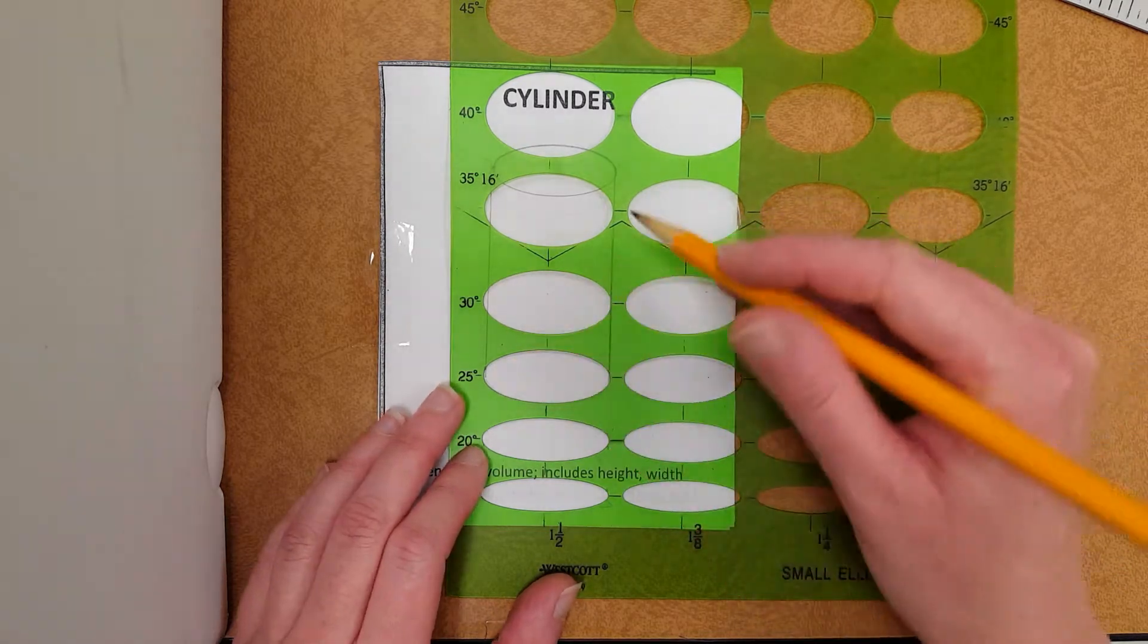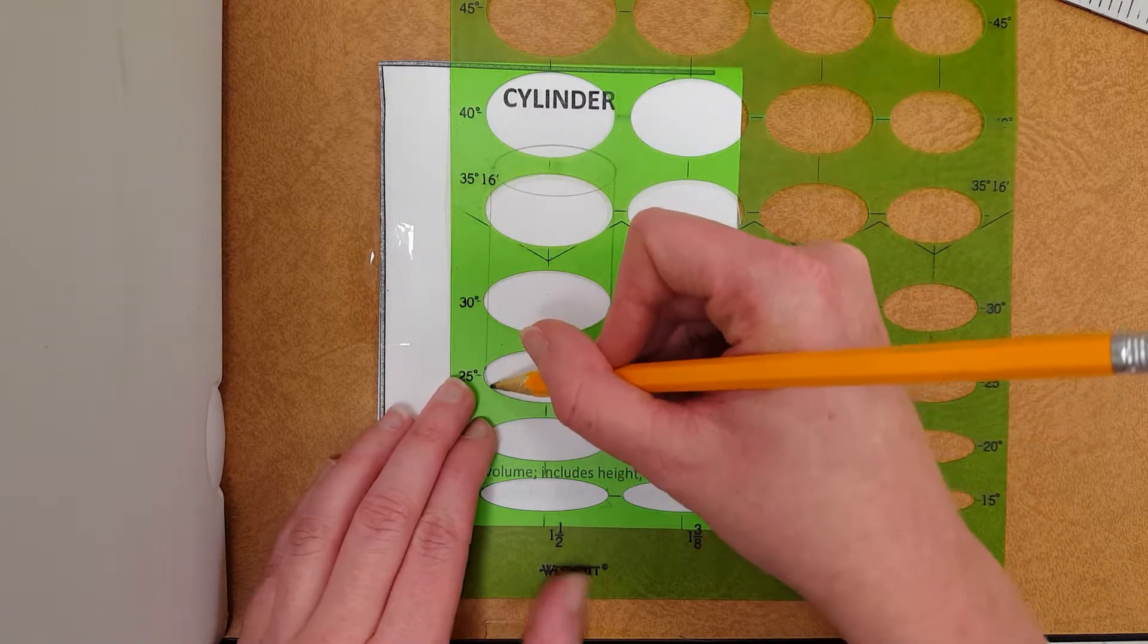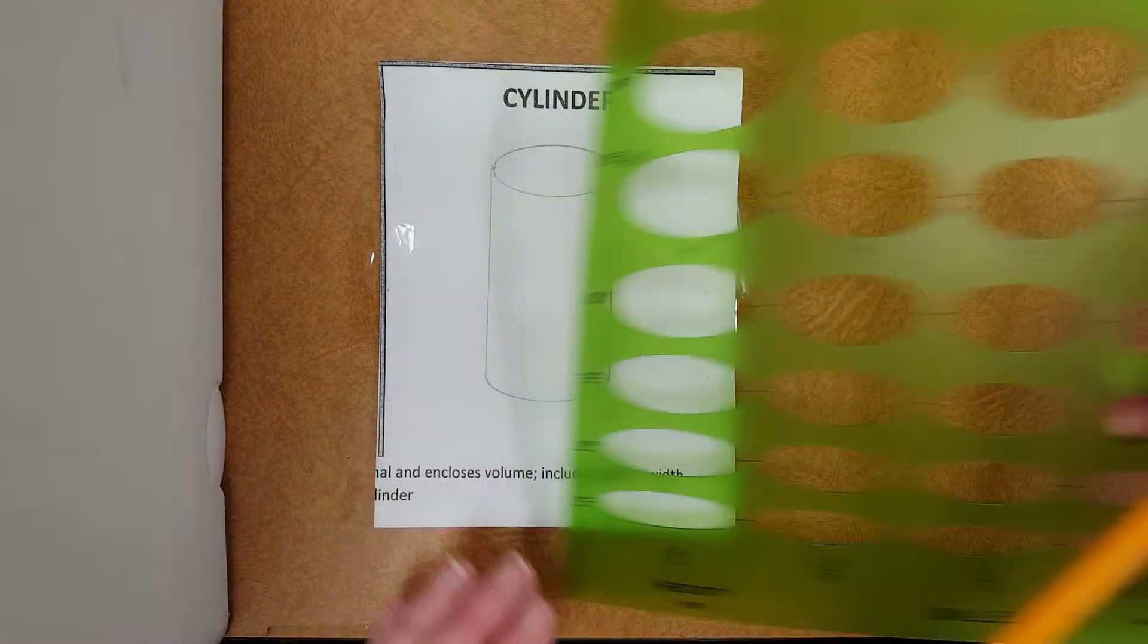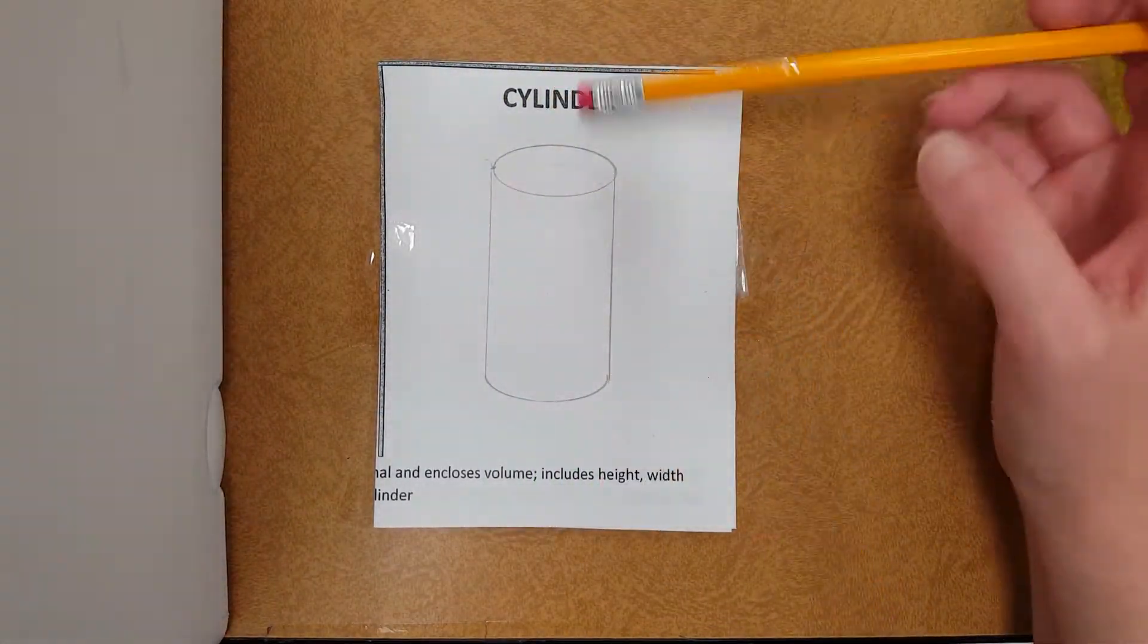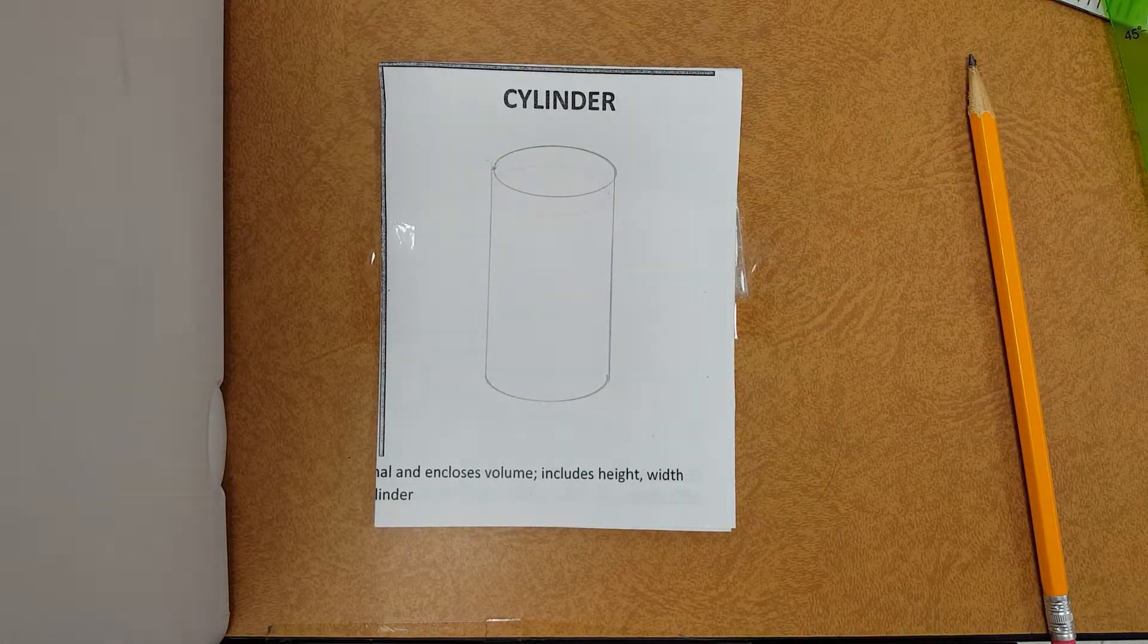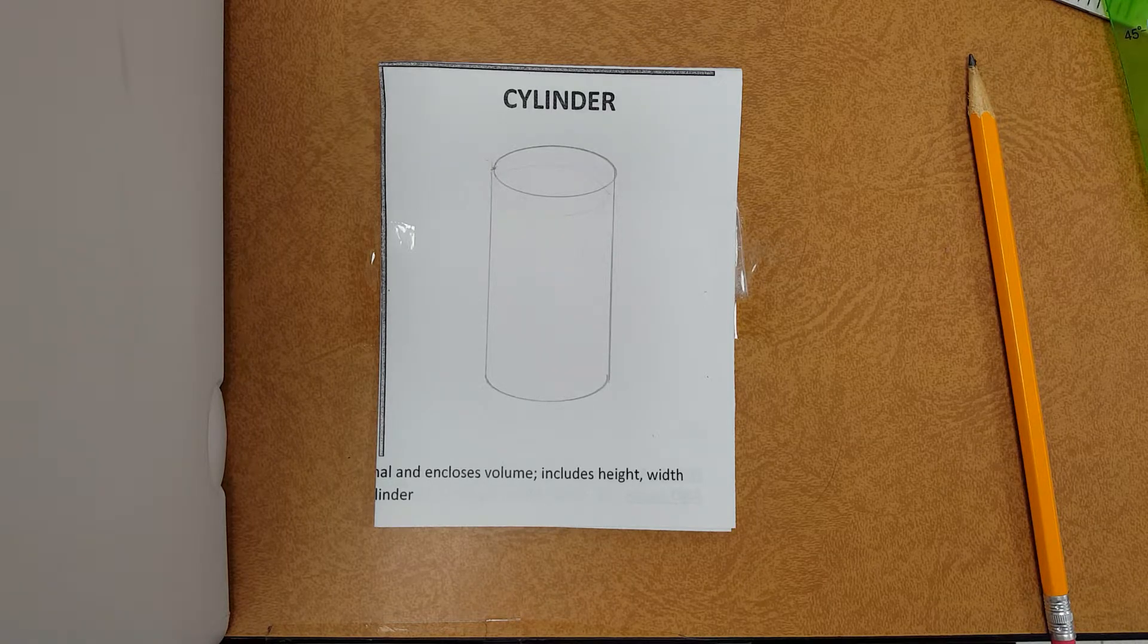So all we really need to do is just trace the bottom part of this ellipse to create the illusion that it's resting on the table. We're seeing it slightly from above, which means we're seeing this part in the curve. And that pretty much is the cylinder right there.